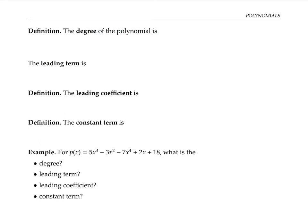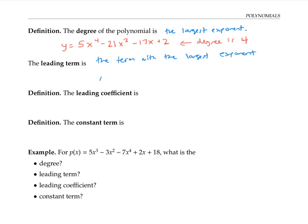I'll start with some definitions. The degree of a polynomial is the largest exponent. For example, for this polynomial, the degree is four. The leading term is the term with the largest exponent. It's conventional to write the polynomial in descending order of powers of x, so the leading term is first, but the leading term doesn't have to be the first term.